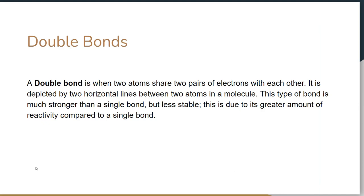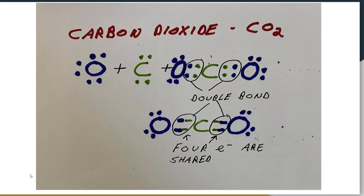Double bonds, as you can probably guess, is when two atoms share two pairs of electrons, or four electrons. This type of bond is stronger but less stable. So let's take a look at this one. We're looking at carbon dioxide, a pretty classic example.